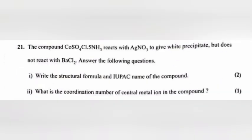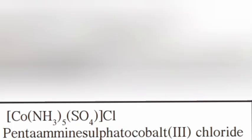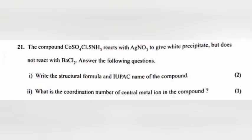Question 21: The compound [Co(SO₄)Cl(NH₃)₅] reacts with AgNO₃ to give a white precipitate but does not react with BaCl₃. Answer the following. 21.1: Write the structural formula and IUPAC name of the compound. Answer: Pentaammine sulfato-cobalt(3)-chloride. 21.2: What is the coordination number of the central metal ion? Answer: 6.